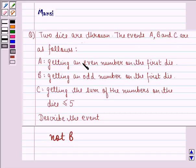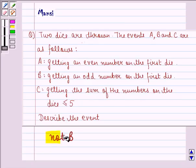Event A is getting an even number on the first die. Event B is getting an odd number on the first die. And C is getting the sum of the numbers on the dice less than or equal to 5. Now describe the event not B.